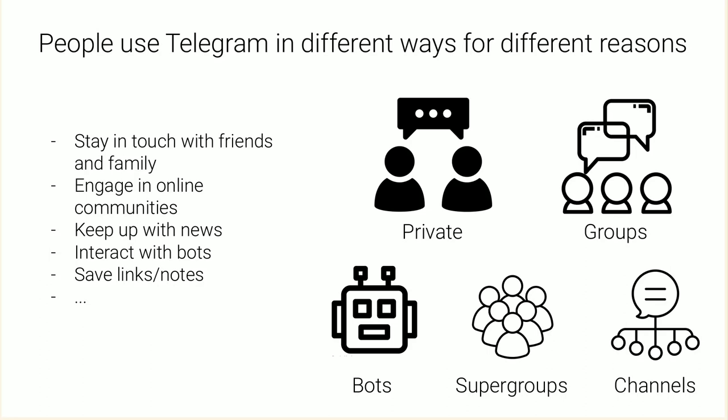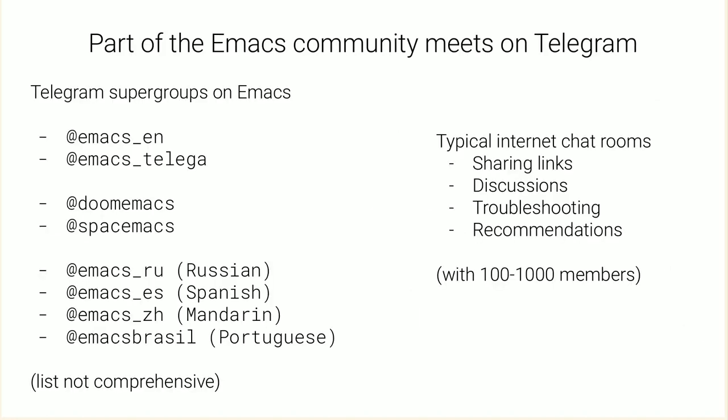When it comes to instant messaging, many people call Telegram home. It shouldn't come as a surprise then that Emacs users want to meet on Telegram as well. And indeed, there's an Emacs community on Telegram. Here I'm listing a few supergroups about Emacs. There are language groups: Emacs English, Emacs Russian, Emacs Spanish, Emacs Mandarin, Portuguese. There are groups specific to starter packs, for example Doom Emacs and Spacemacs, and there are groups specific to packages like Telega, which I'm going to discuss later.